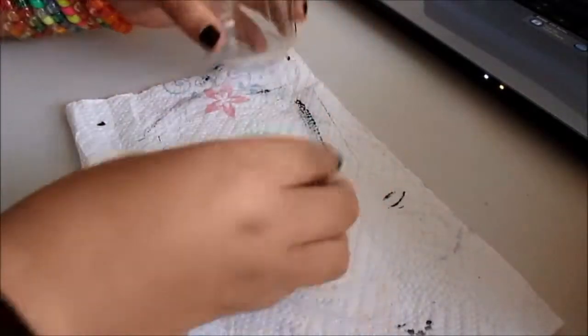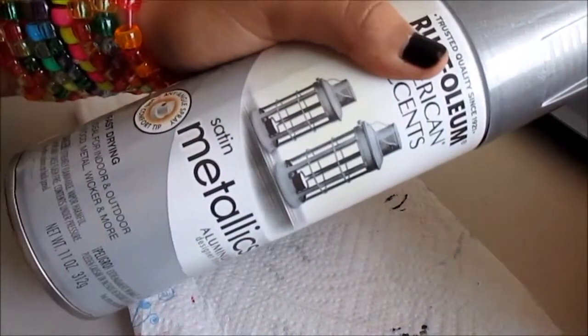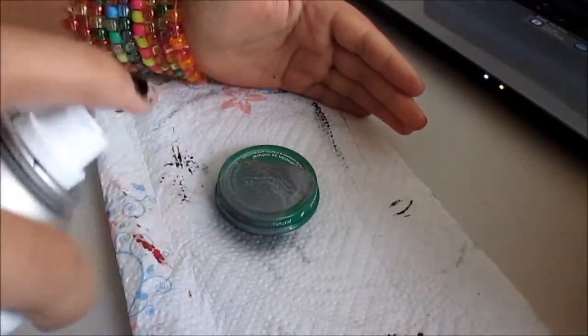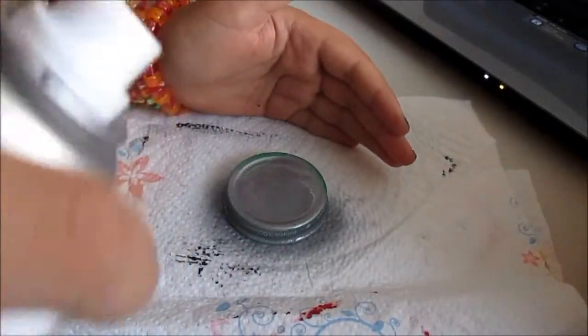Next you get a jar. You can use a mason jar or I am using a jar that had baby food in it. Next I'm getting that spray and spraying it on the cap so that it looks a lot better than what it really did.